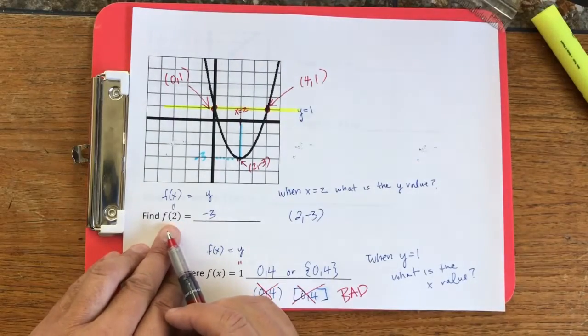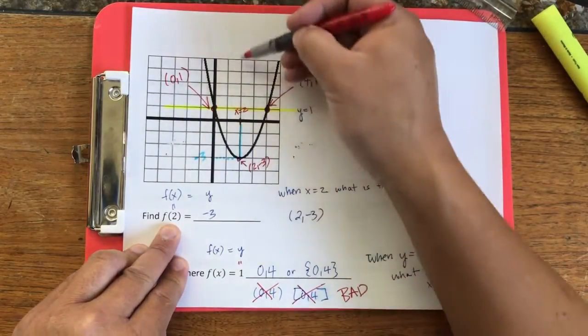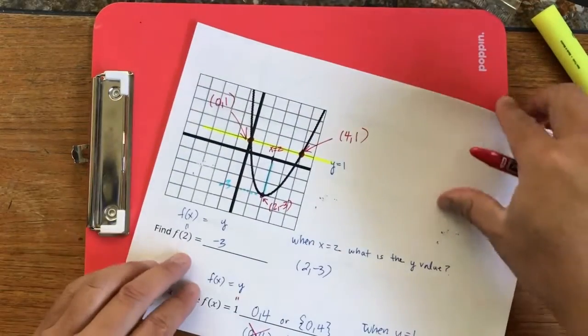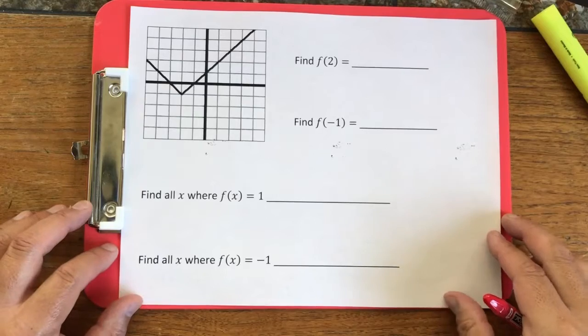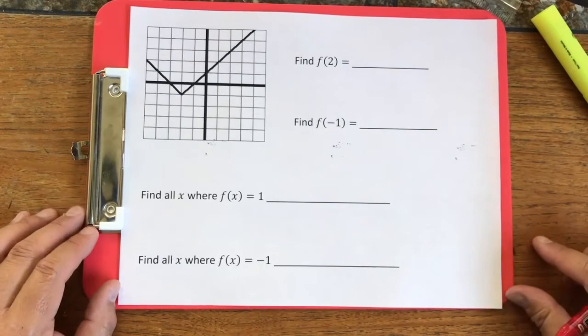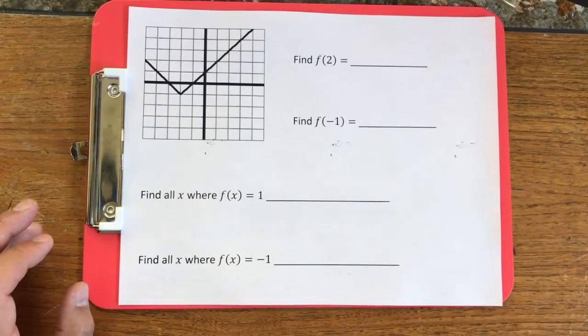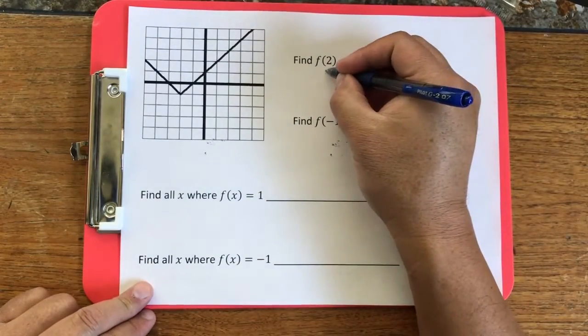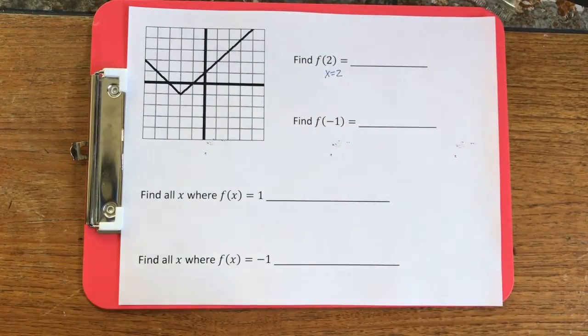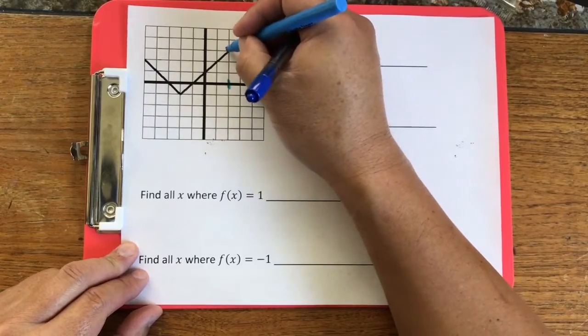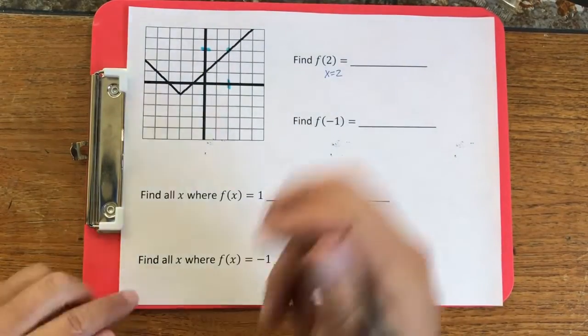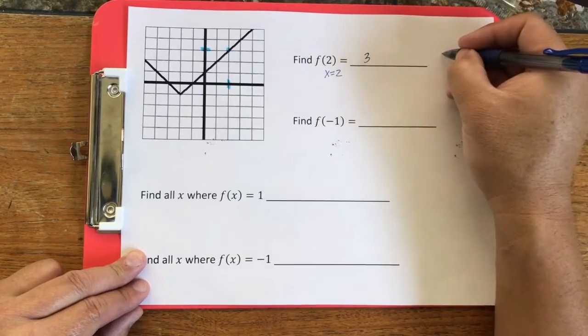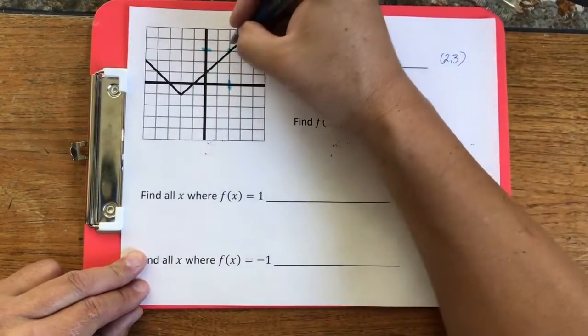So the question here is when my y value equals 1, where does it hit the graph? It hits it at x equals 0 and x equals 4. For this one, when x equals 2, so this right here, where does it hit the graph? Right there at y equals negative 3. Go ahead and pause this video and see if you can do these problems. Now that you've had a chance to look at these problems, let's do this. For this one, my x equals 2. I want to know what the y value is. So x equal to 2 is right here and my y value is 3. So the idea here is that 2 comma 3 is on this graph. This point right here.